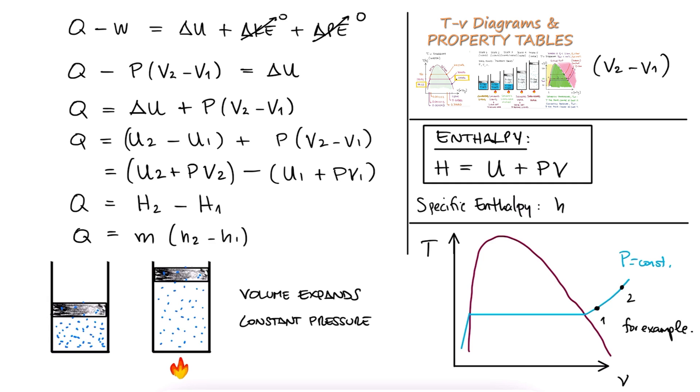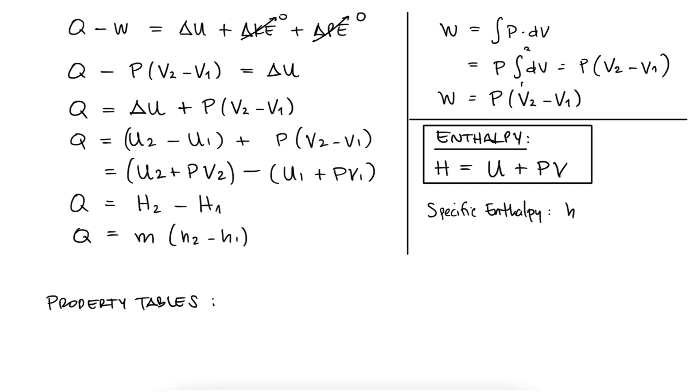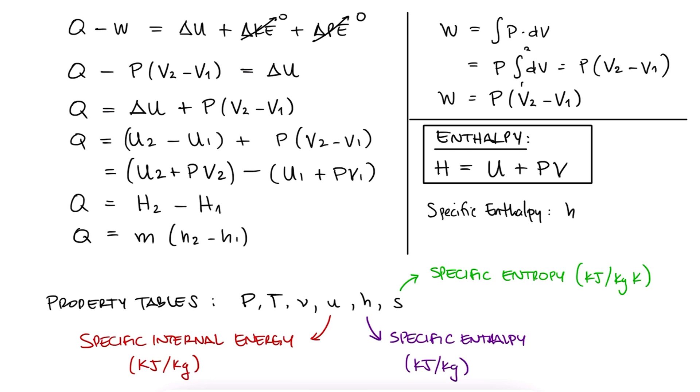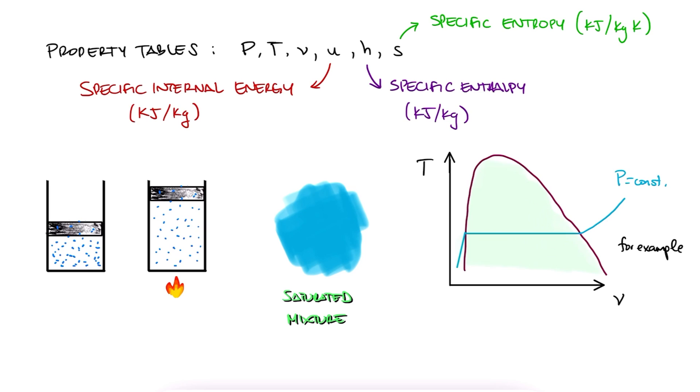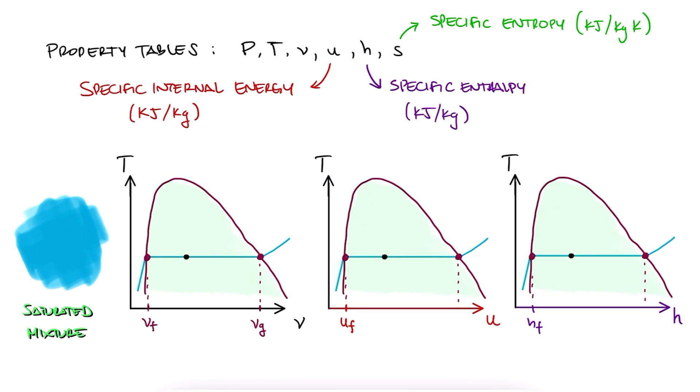In the Property Tables lecture, we went over how these tables have all the intensive properties we will need for any thermodynamic process, including specific internal energy u in kJ per kg, specific enthalpy h in kJ per kg as well, and specific entropy s in kJ per kg Kelvin. What this means is that, for example, if we are in a saturated mixture phase, and just like with the specific volumes vf and vg, these tables will show us uf and hf for the internal energy and the enthalpy of saturated liquids, and ug and hg for the internal energy and enthalpy of saturated vapor. The way we use these is exactly the same as how we use the specific volume for saturated liquid and saturated vapor. The expression we derived in the previous lecture for quality is also applicable for these two properties.